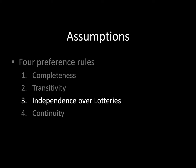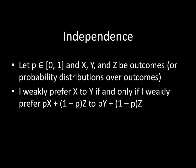We're going to start off with independence over lotteries. Independence says the following: let p be a probability — some value between 0 and 1 — and x, y, and z be outcomes, or probability distributions over outcomes. Independence says that I weakly prefer x to y if and only if I weakly prefer the lottery of x with probability p and z with probability 1 minus p, to the lottery of y with probability p and z with probability 1 minus p.